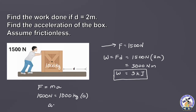Solving for A, this is just 1,500 divided by 1,000, equivalent to 1.5. The SI unit for acceleration is meters per second squared. So this is our acceleration: 1.5 meters per second squared.